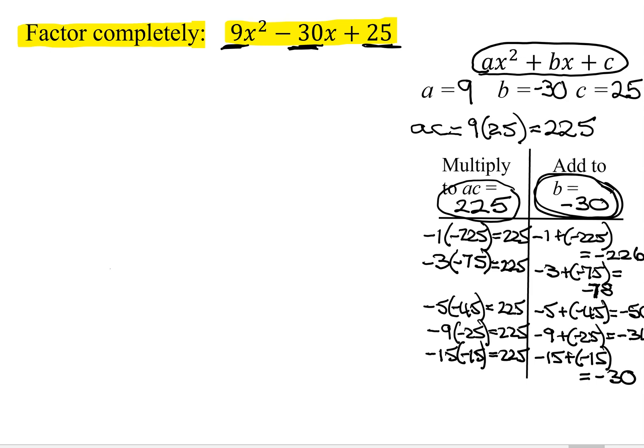Okay, well, I continued to work on it. I just noticed that over here that had fallen off the edge of the page. So I've just rewritten it. I tried negative 5 and negative 45. That didn't work. Negative 9 and negative 25 did not work. But finally, negative 15 and negative 15 multiplied to positive 225. Negative 15 plus a negative 15 adds to a negative 30. So the numbers I'm looking for are negative 15 and negative 15.